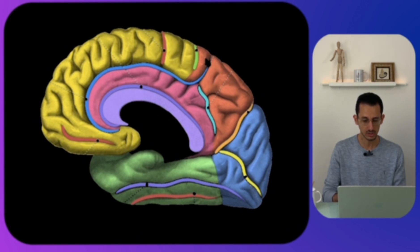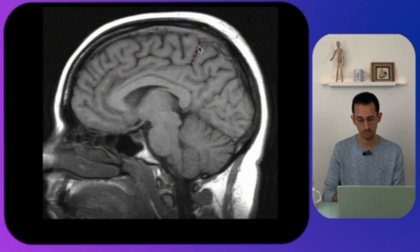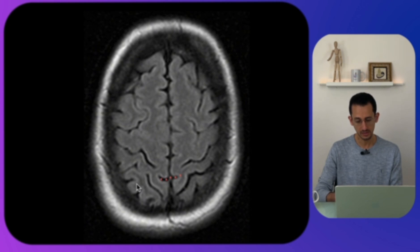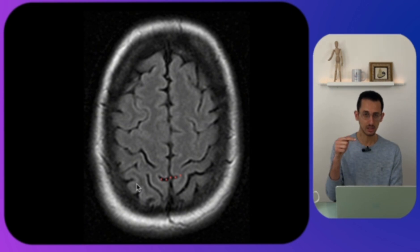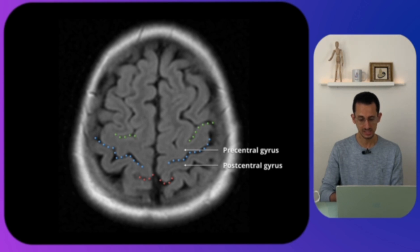Looking at this MRI scan, this is the cingulate sulcus going all the way up to form the marginal sulcus. The marginal sulcus separates the paracentral lobule from the precuneus posteriorly. On MRI imaging, higher up you will find that this sulcus appears as the only one forming a connected line between the two hemispheres. Once you identify it, the first sulcus in front of it is the central sulcus, then posteriorly the postcentral gyrus, and anteriorly the precentral gyrus — making it easy to identify the motor cortex.